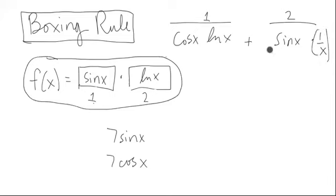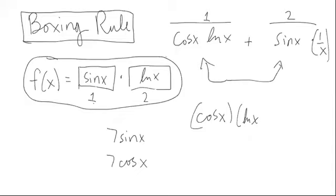We just took the derivative of f of x. So it's just going to be the sum of these two things. Cosine x times natural log x. We have cosine of x times natural log x plus sine x times one over x. And that right there is the derivative of f.